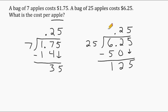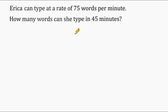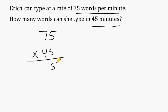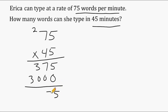Let's do another example. Erica can type at a rate of 75 words per minute. How many words can she type in 45 minutes? Most people would understand right away this is a simple multiplication problem — Erica types 75 words in one minute, so how many words in 45 minutes? Multiply 75 times 45. Start by multiplying 5 by 75 which is 375. Put a zero, then multiply 4 by 75 which is 300. Add those together and we get 3,375 words.